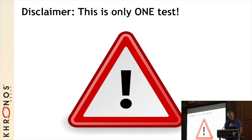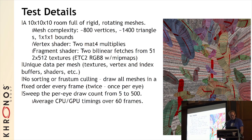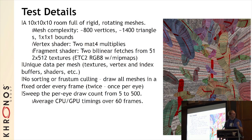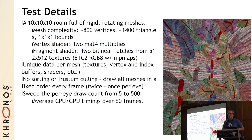Now the Google lawyers are happy, I will talk about the test. The scene I rendered was a 10x10x10 room full of randomly positioned rotating rigid meshes. You can see a screenshot of it over here. You can also see that I'm a terrible artist — that's not the point. Each mesh had around 800 vertices and 1400 triangles. It was roughly 1x1x1 unit large.